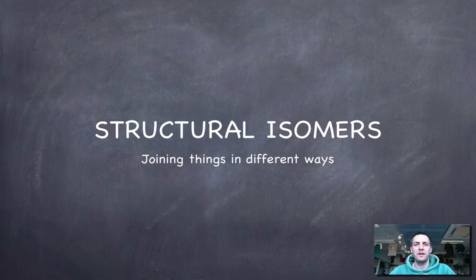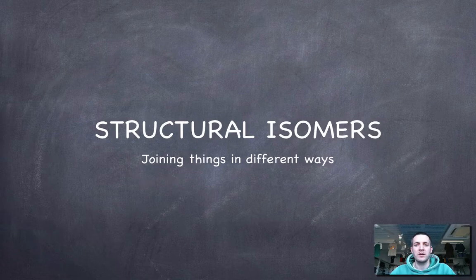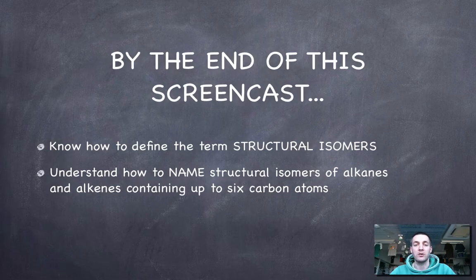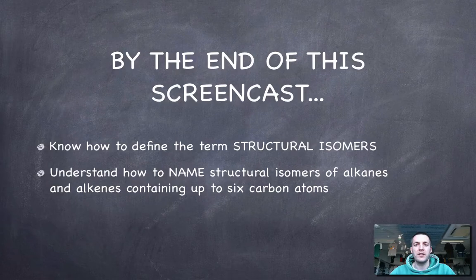Hello. Welcome to the fifth in a series of films about the standard-level organic topic. The previous films have been quite short — we've just been introducing some of the homologous series. This one is probably going to be a bit longer. We're going to talk about things called isomers, and in particular structural isomers. There are other types of isomers, but we're not worried about those in the standard-level topic. We're going to do this for alkanes and alkenes containing up to six carbon atoms.